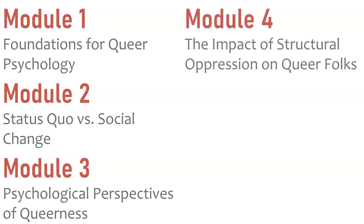Module four is all about the impact of structural oppression: living as a member of an oppressed group and how that impacts your mental health, physical health, experience in healthcare, education, job seeking, encountering discrimination and prejudice related to homophobia and transphobia. And intersectionally — let's put racism on top of that, and ableism and sexism on top of that.